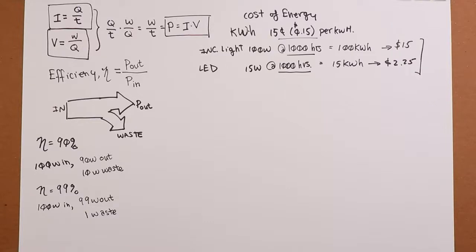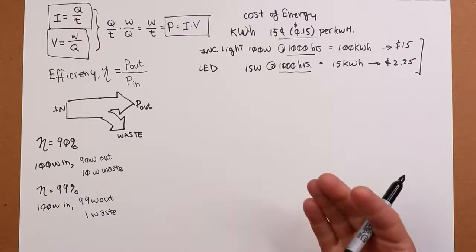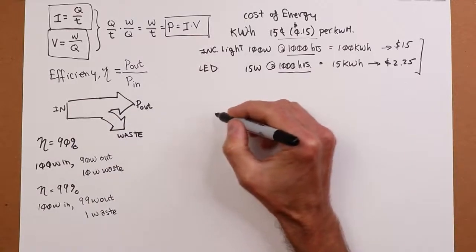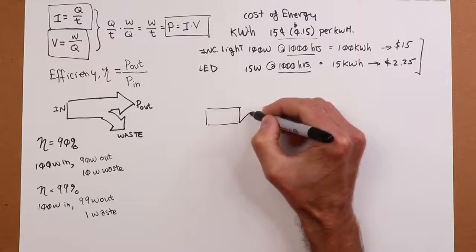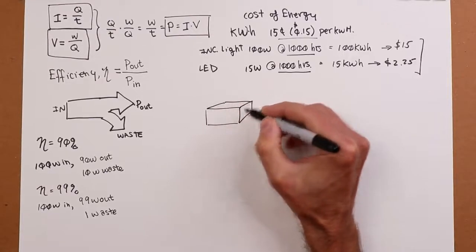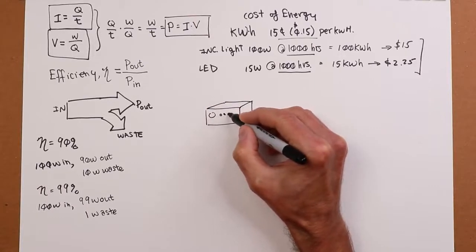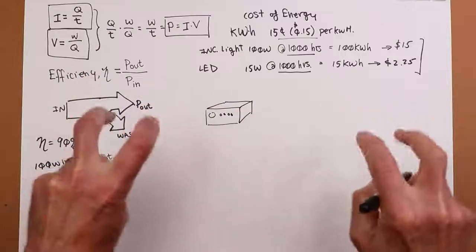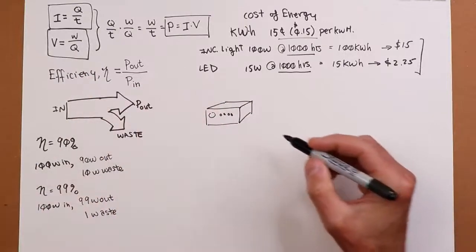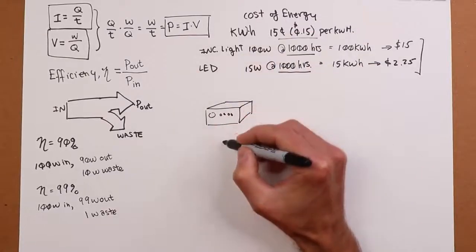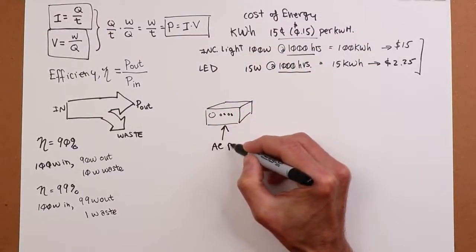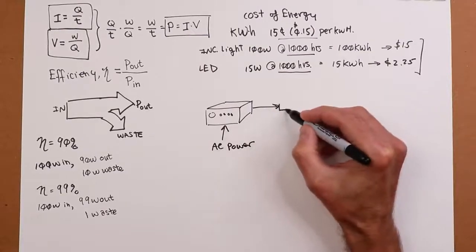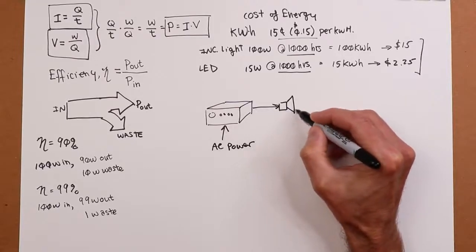Where do we go from here? We can talk about efficiency with all kinds of devices. I could have an audio amplifier like my home stereo. So I'll just draw a little box here. Have some knobs on it. And I think of the input, of course, as maybe a CD player or something like that. But in our power calculation, the input is the AC power.